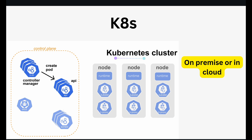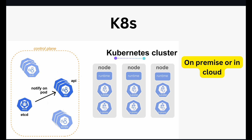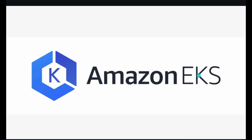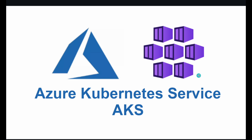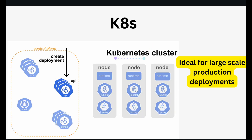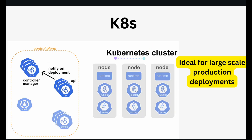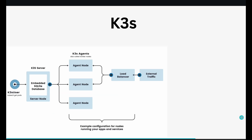Public cloud providers have managed Kubernetes services. For instance, AWS has EKS, Google Cloud has GKE and Azure provides AKS. It is ideal for large-scale production deployments.